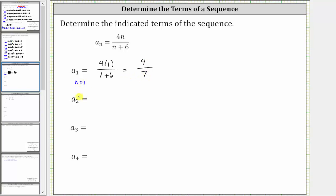To determine a_2, we now know n = 2. Substituting 2 for n, a_2 = 4(2)/(2+6). 4 times 2 is 8, and 2 plus 6 is also 8.